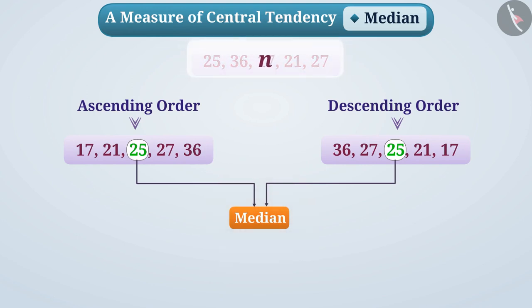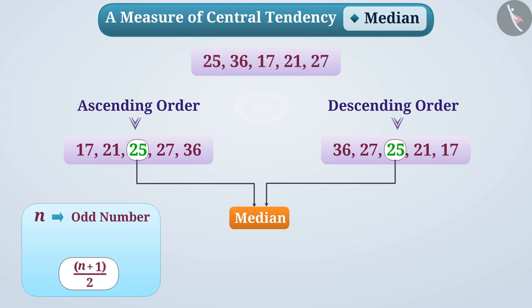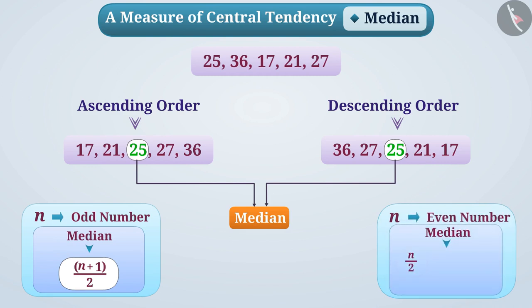If we are given n observations, then we arrange them in ascending or descending order. If n is an odd number, then n plus 1 divided by 2 will give you the position of the median in the observations. But if n is an even number, then median is the mean of n divided by 2th and n divided by 2 plus 1th observation.